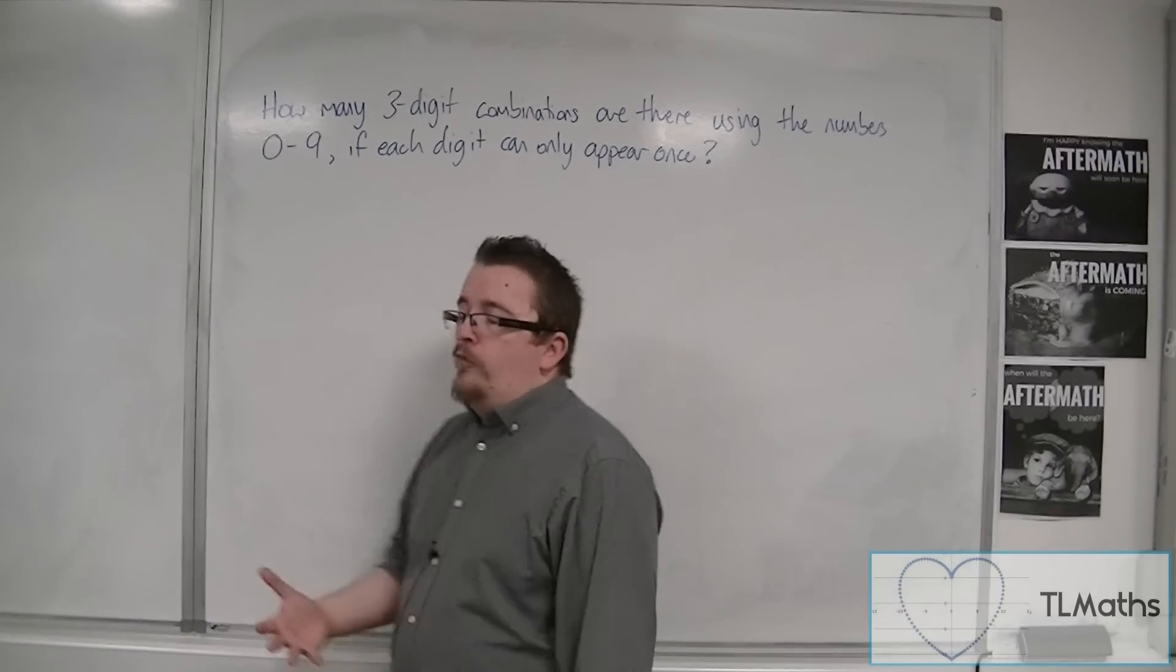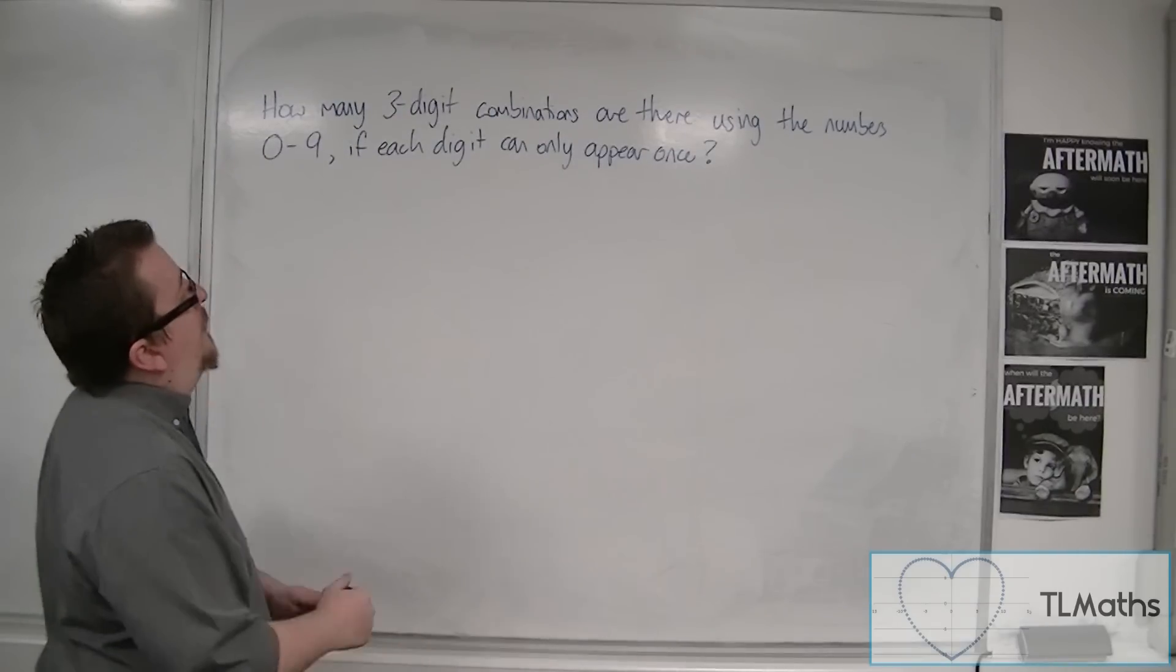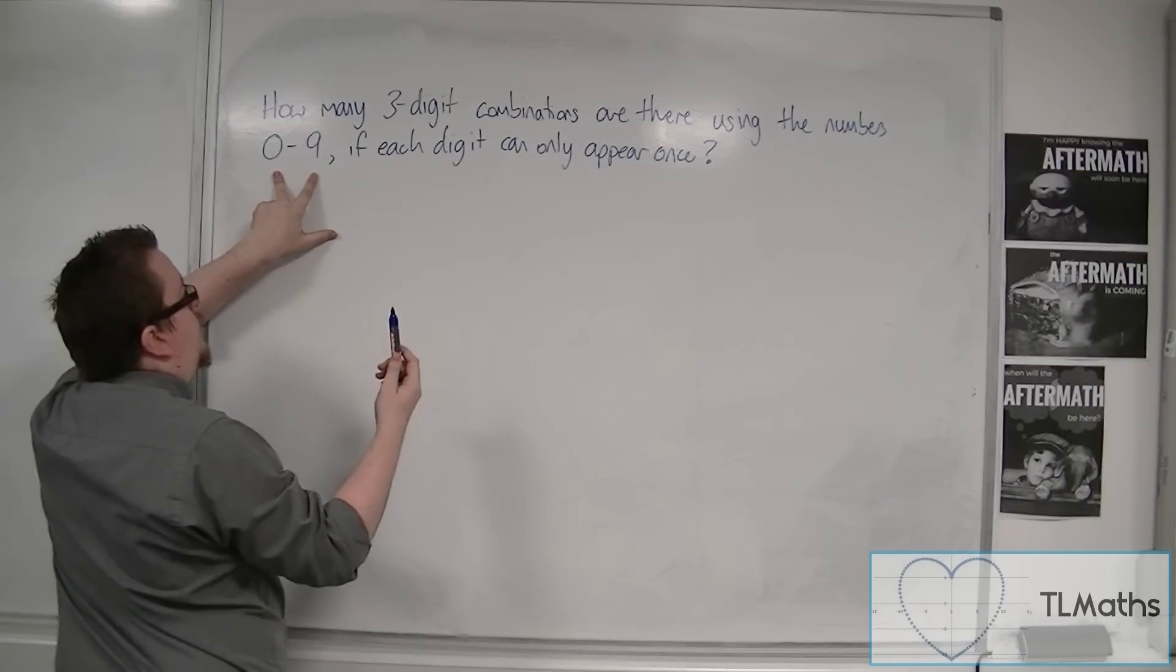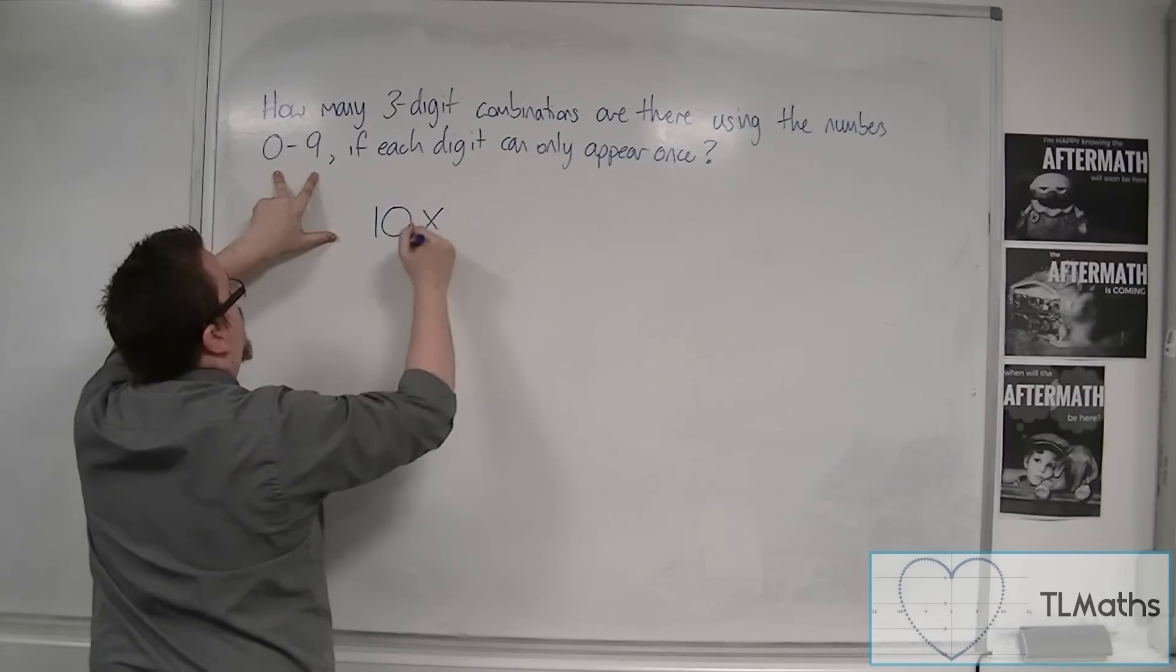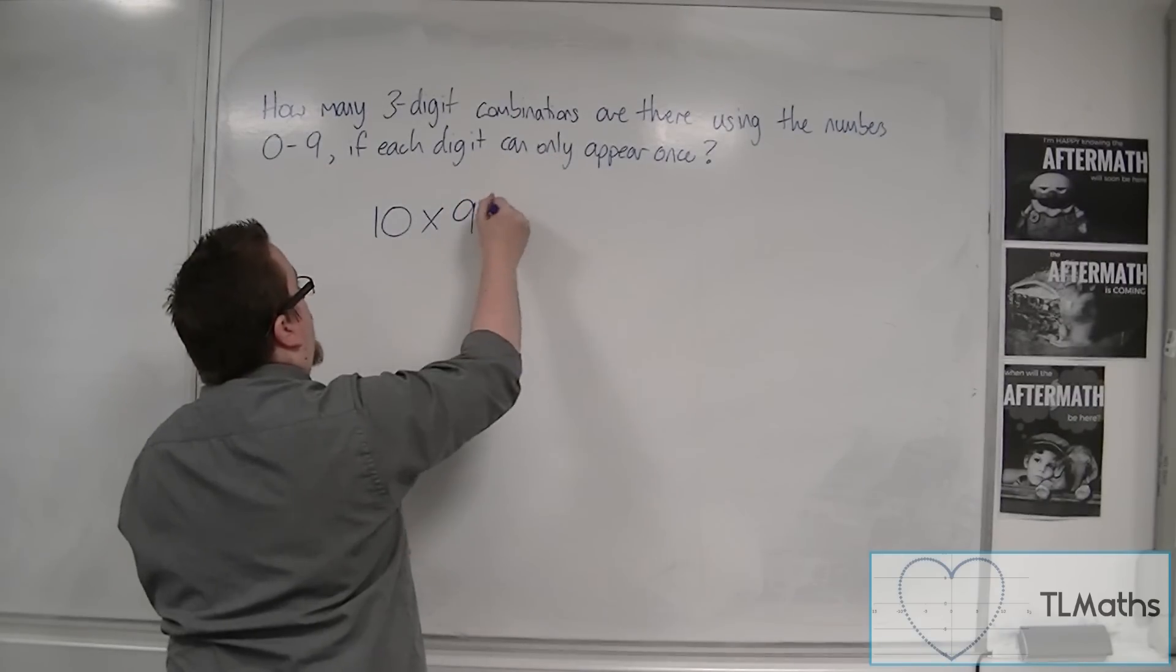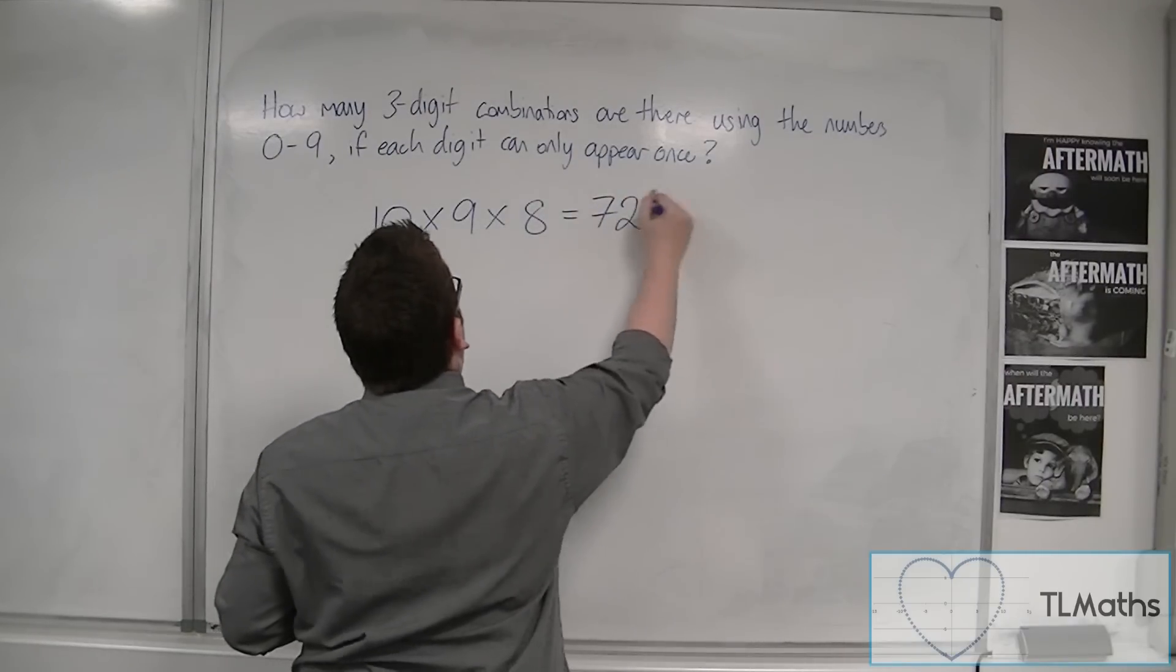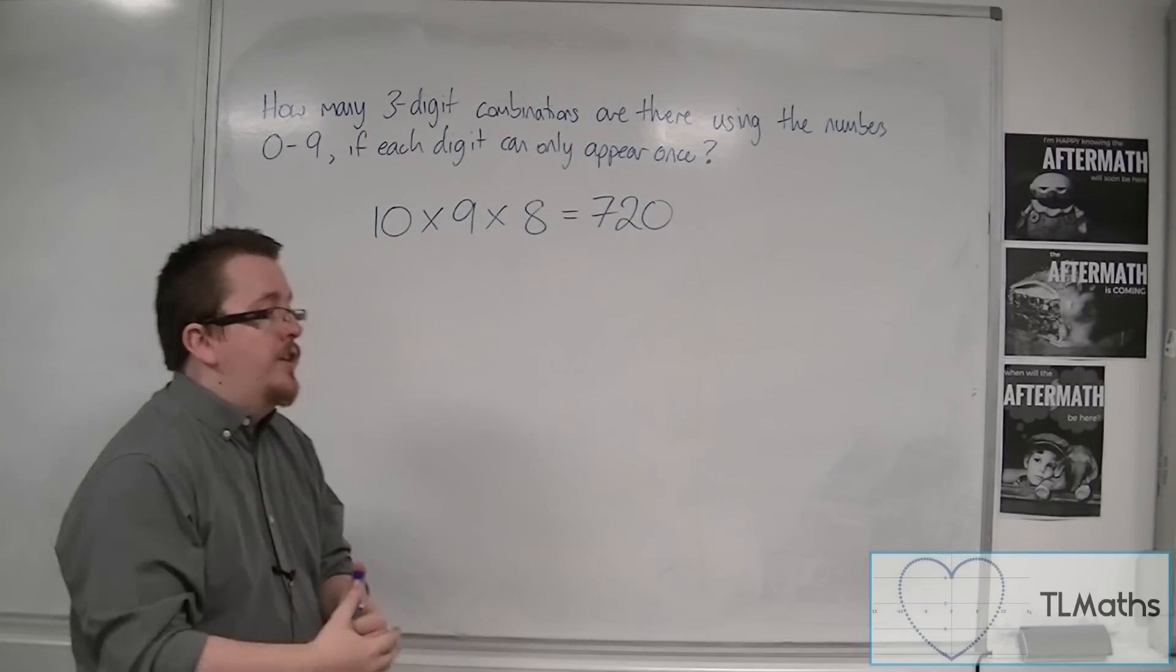When we looked at this from the point of view of permutations, what we saw was that for the first digit, we've got the choices of 0 to 9, so there are 10 choices. So there was 10 times, then as I used one digit, there would be 9 choices left over. And then once I'd used those two choices, I would have 8 choices left over. And this was 720. So there were 720 different arrangements that I could use.